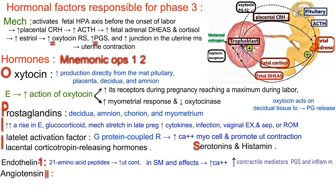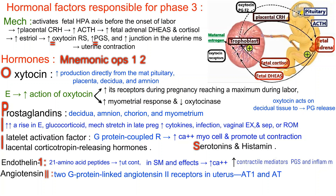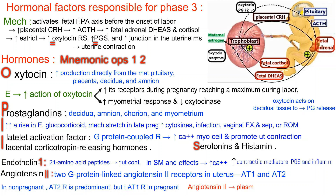Angiotensin-2: there are two G-protein linked angiotensin-2 receptors in the uterus — AT-1 and AT-2. In non-pregnant women the AT-2 receptor is predominant, but the AT-1 receptor is preferentially expressed in pregnant women. Angiotensin-2 binding to the plasma membrane receptor evokes contraction.